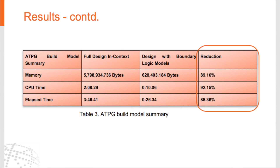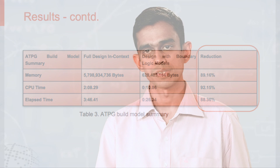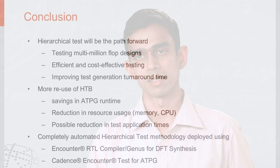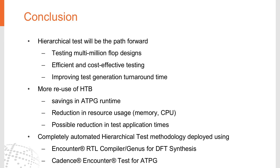If we use boundary model representation, we see a reduction of about 89 to 90 percent in memory usage as well as CPU usage. Global Foundry's design for test synthesis methodology work is completely built based on the Cadence Encounter Test. We have been working very closely with Cadence on various new test solutions such as hierarchical test and 1687.